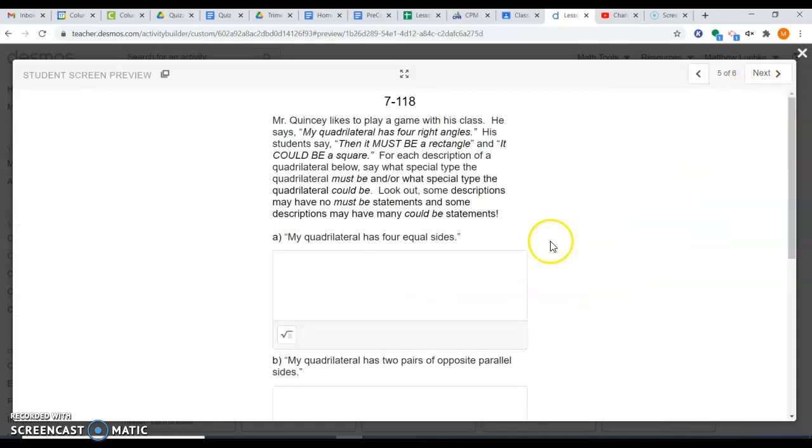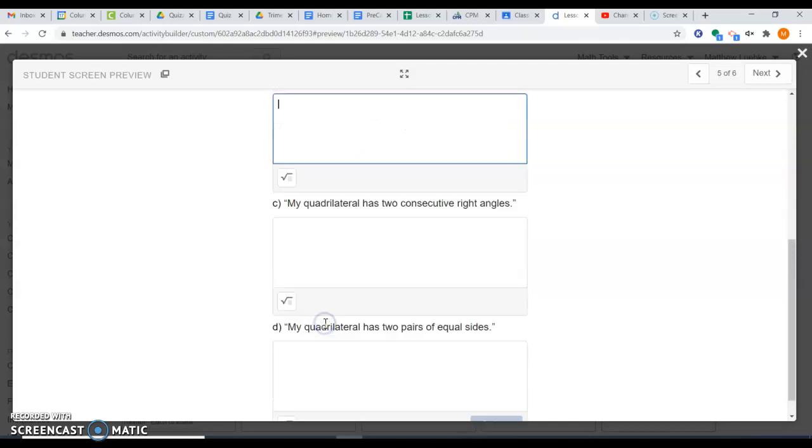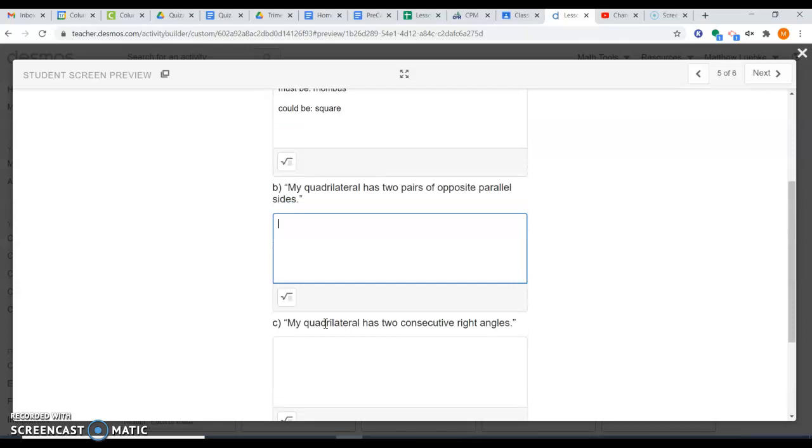Slide five is a must be, could be slide. It says my quadrilateral has four equal sides. It must be something, it could be something. When they say my quadrilateral has four equal sides, I start thinking of shapes with equal sides. I think of a square, I think of a rhombus. It could be a square, but it's not necessarily a square because we don't have enough information. It says the quadrilateral has four equal sides, but to be a square we'd have to know that it also has four right angles. We don't know that, so we say it could be a square, but it also could not be a square. But it must be a rhombus, because with this information, four equal sides, we can say that it must be a rhombus. If it's not necessarily a square, then it has to be a rhombus. Same kind of thing for B, C, and D. We think, what must it be? What could it be?